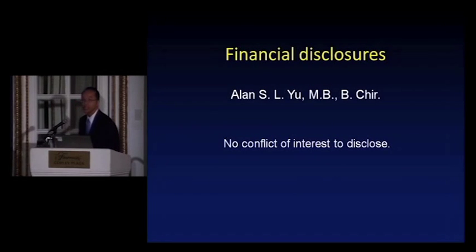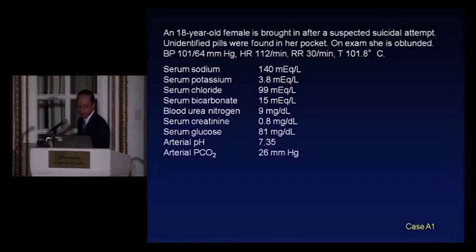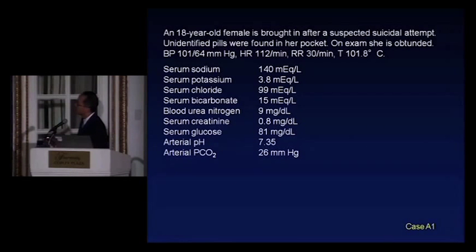An 18-year-old female comes in after a suspected suicide attempt with unidentified pills in her pocket. She's obtunded. Blood pressure is 101 over 64, heart rate 112, respiratory rate 30, temperature 101.8. Serum bicarb is 15, creatinine 0.8, glucose 81, arterial pH 7.35, and PCO2 is 26.